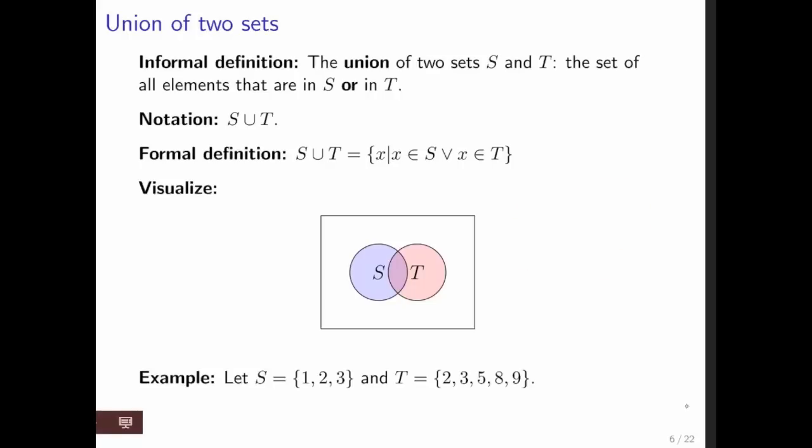And if we have an example where S is 1, 2, 3, and T is 2, 3, 5, 8, 9, then S union T is the set that contains all the elements of S and all of the elements of T.